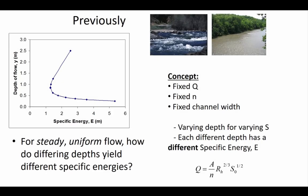Let's look at the specific energy diagram. Remember that what it shows us is that there are alternate depths — for example, if we have a certain amount of specific energy, that vertical line can intersect the curve at two different depths that have the same amount of energy. This point of minimum specific energy corresponds to the critical depth. Any depth greater than the critical depth corresponds to subcritical flow, and any depth less than the critical depth is supercritical flow.